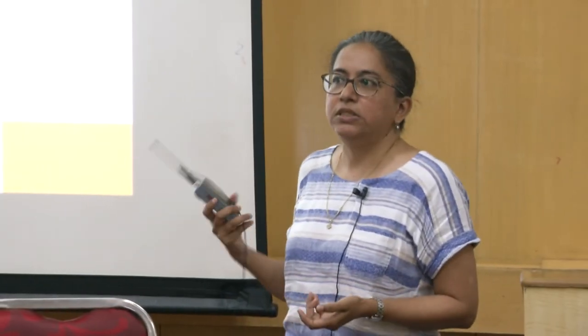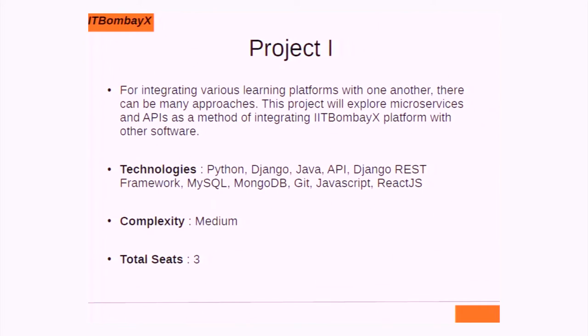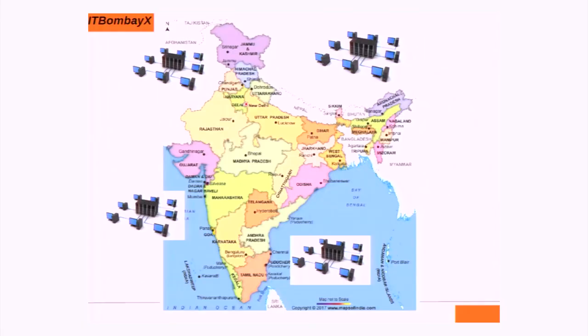The first project is around this theme of using APIs for integration. APIs can also be used for integrating two applications with each other. These are the technologies we will be using for this project: Python, Django — all our projects are mostly around Python and Django — Java to some extent, REST APIs, the REST framework, MySQL, MongoDB because those are our main two databases, Git, JavaScript, and ReactJS. Going back to the diagram, the APIs will allow each of these instances to talk to each other and share data. The concept is to allow that kind of data exchange to be possible.